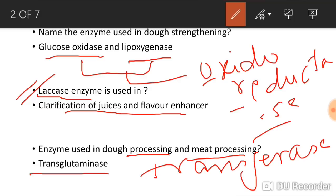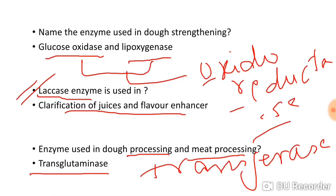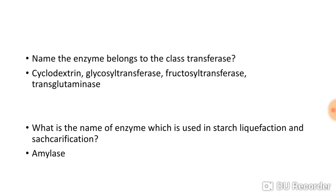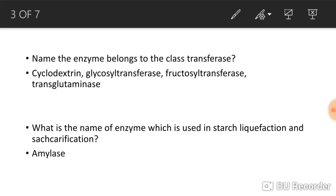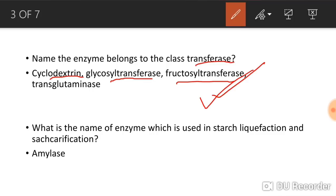The next question: name the enzymes belonging to the transferase class. One enzyme we've already studied is transglutaminase. The other enzymes belonging to the transferase class are cyclodextrin glycosyl transferase and fructosyl transferase. There are a total of four enzymes in the transferase class, so don't skip any of the videos related to this exam.